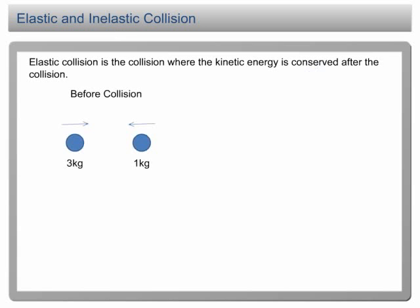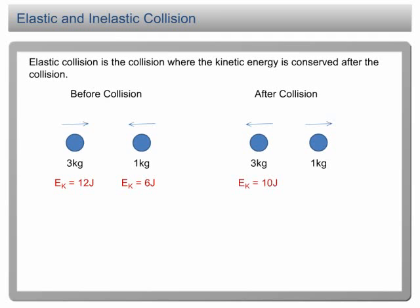For example, two balls of mass 3 kg and 1 kg move in opposite directions. The kinetic energy of the 3 kg ball is 12 joules, while the kinetic energy of the 1 kg ball is 6 joules. After the collision, the kinetic energy of the two balls becomes 10 joules and 8 joules respectively.